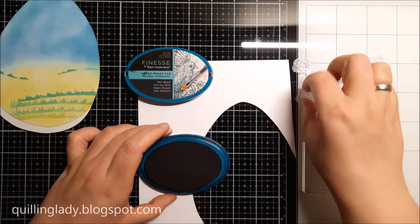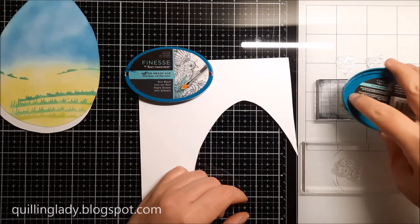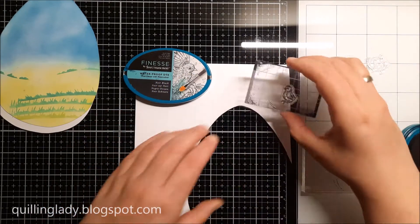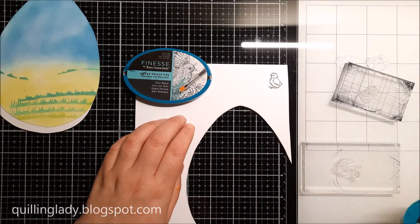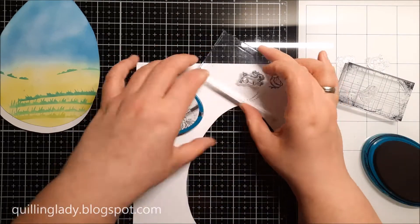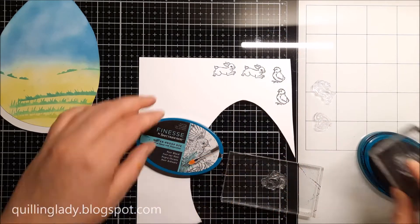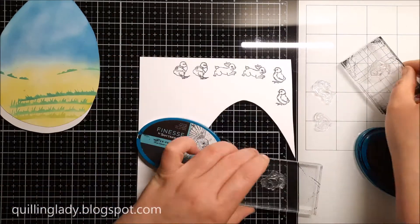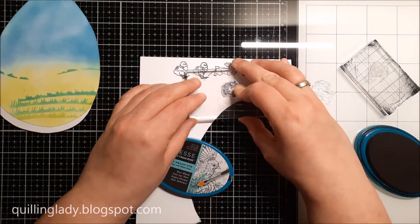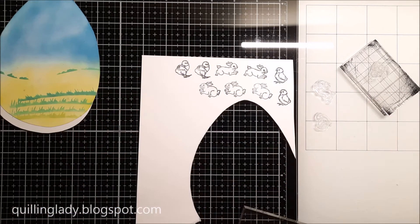Now as you can see, I've got that scrap piece of card I used earlier and I'm going to stamp some chicks and bunnies. I ended up having six of them all together, and again I'm going to use my Zig markers to color them in and wet paintbrush to spread the colors.